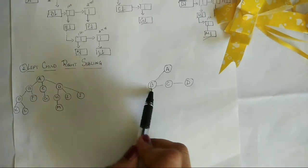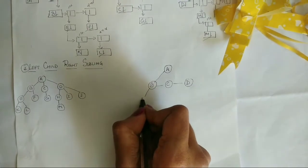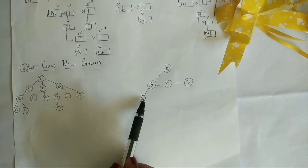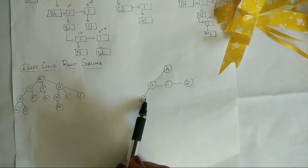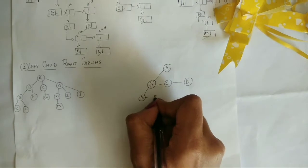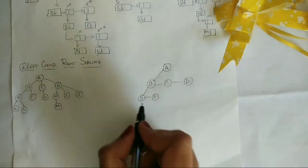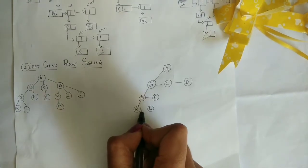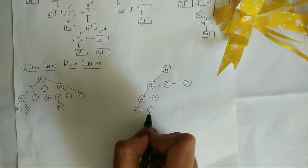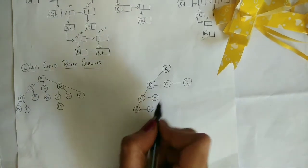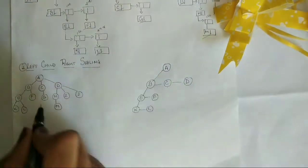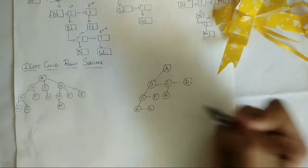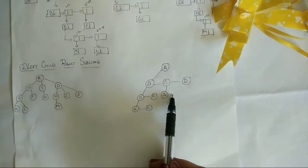For node B, B has a child E placed at the leftmost position. E has a sibling F — that is, B has another child node F. Now E has a child node K and also another child node L, meaning K and L are siblings — left child and right siblings. Moving on, we have node C, which has a child node G placed to the left. There are no siblings to G, so just leave it as it is.